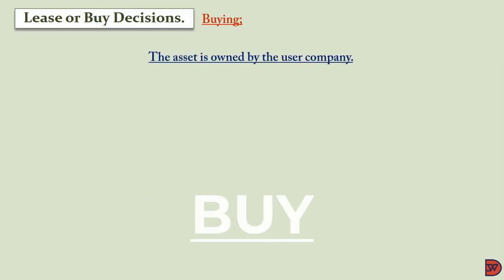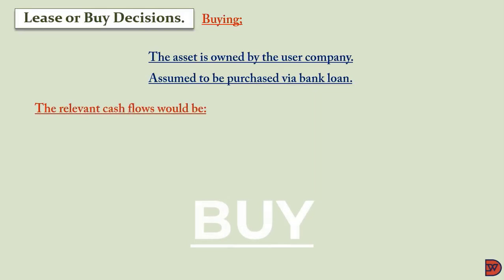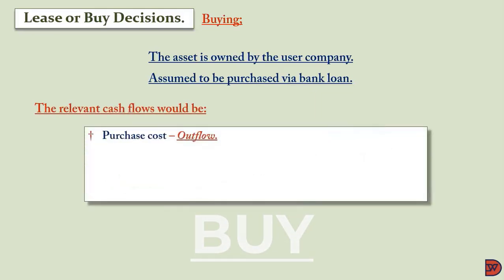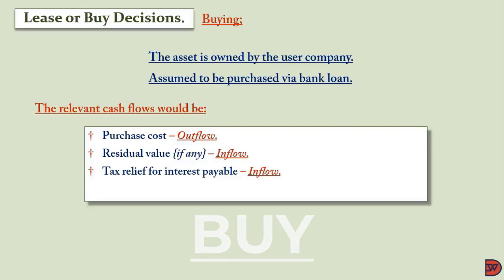When you buy the asset, it belongs to the company with the necessary legal documentation. We assume the asset is bought using a facility, not existing business funds. The relevant cash flows are: the purchase cost, which is an outflow as money leaves the business to the previous owner; and the residual value — if the asset is sold at any point, the proceeds received are an inflow, which is not available in the leasing option.